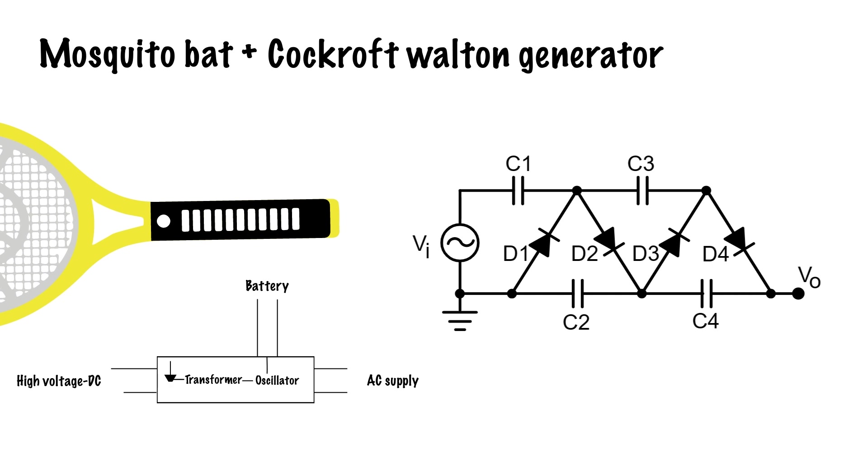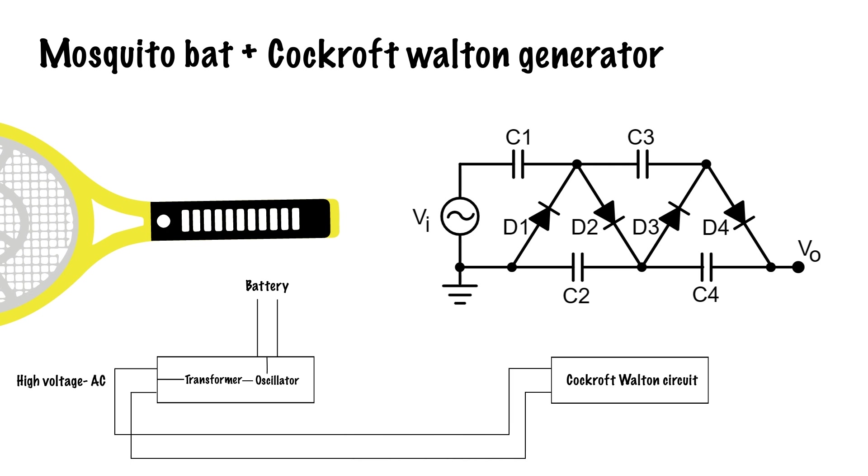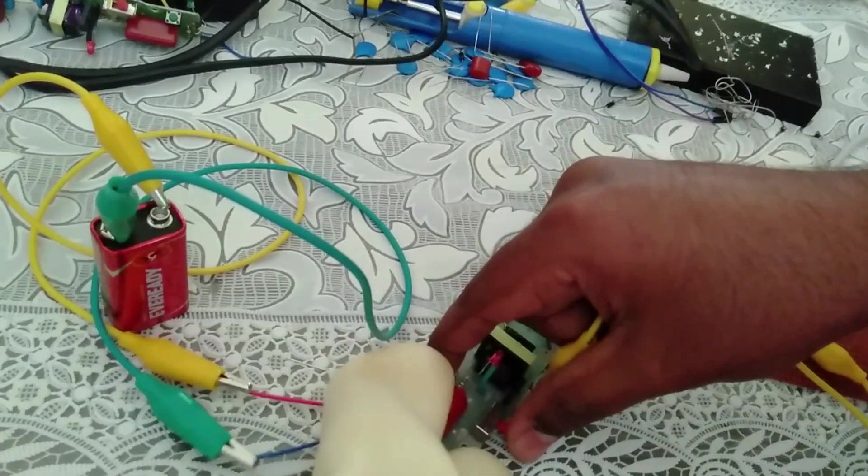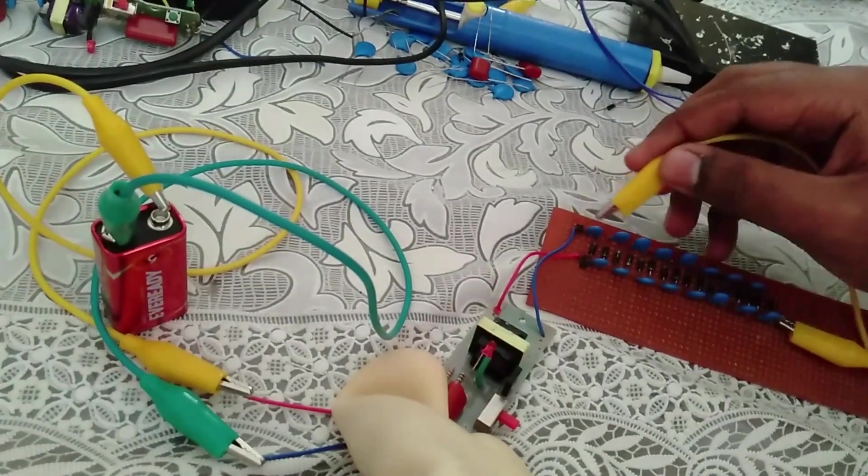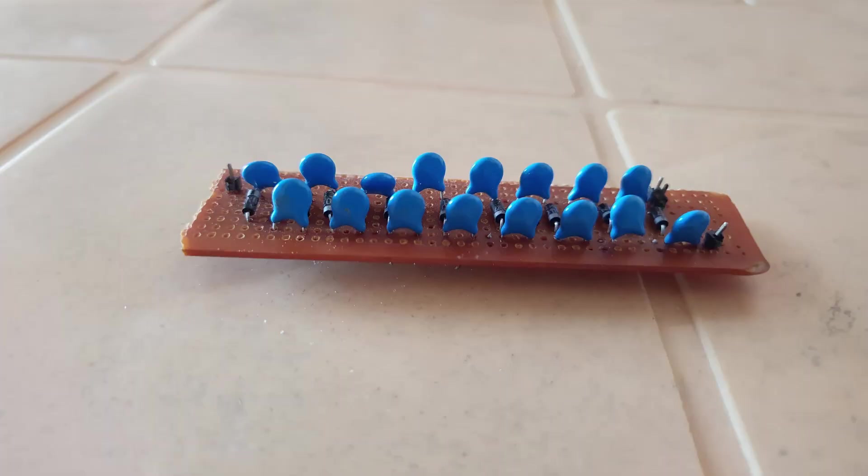Our approach involved bypassing the diodes and feeding the high voltage AC output directly into the Cockcroft voltage generator's input with the goal of achieving an even higher output voltage. We removed the circuit from the breadboard and soldered it to a perfboard to avoid potential current leakage. While the results were promising, our thirst for power was not yet quenched.